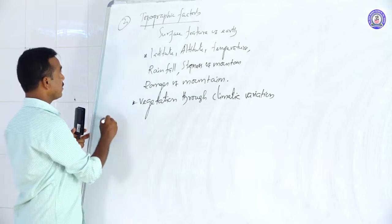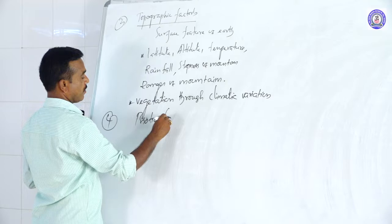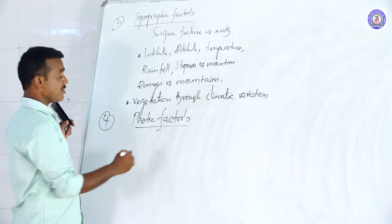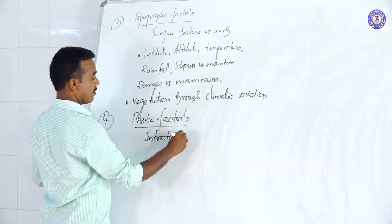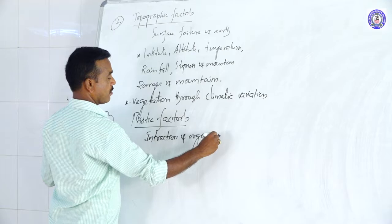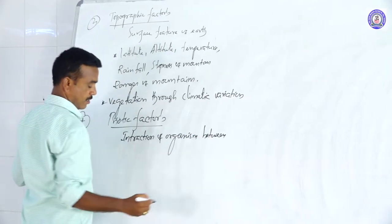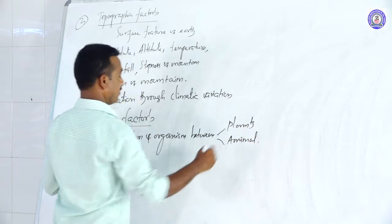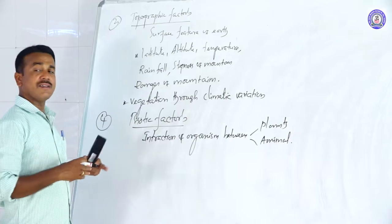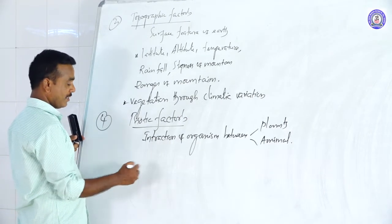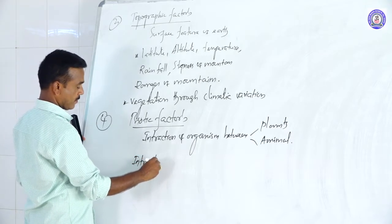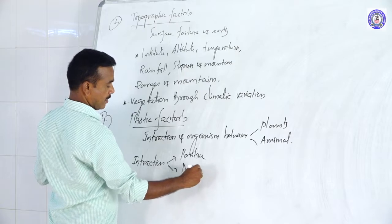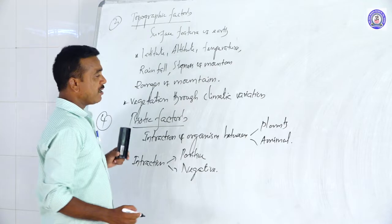The last abiotic factor is the biotic factor. Biotic factors are nothing but the interactions of organisms — interactions between plants and animals. Based on the interactions among them, interactions can be classified as two types: namely, positive interaction and negative interaction.